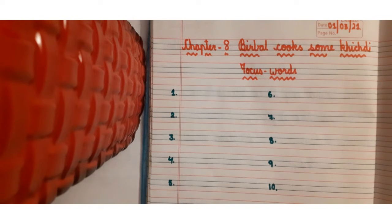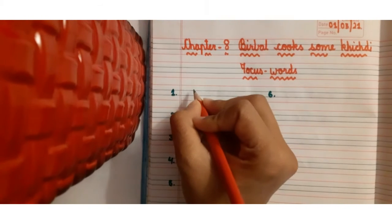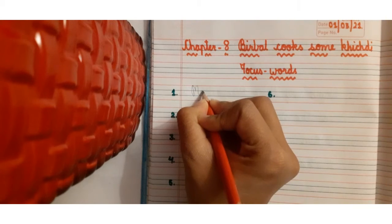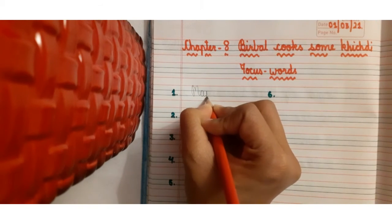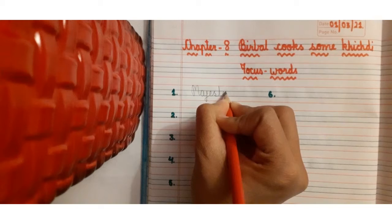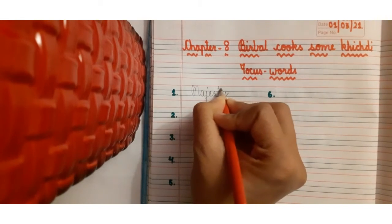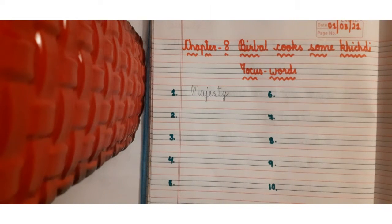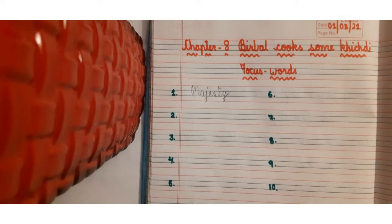So first word is majesty. M-A-J-E-S-T-Y, majesty. When we call the king or queen, we call them Your Majesty.